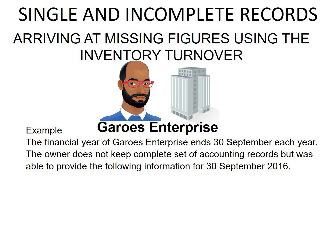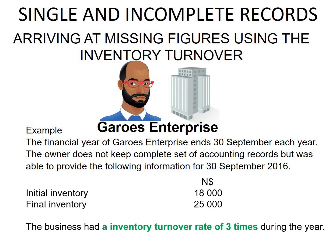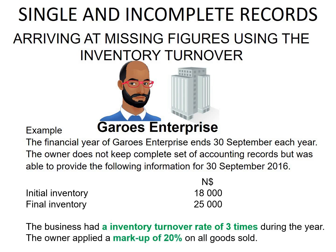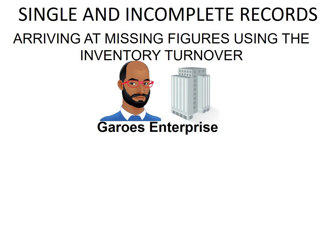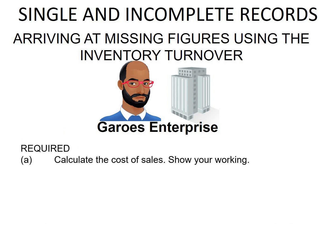In our example we have a company called Garus Enterprise. The financial year ends 30 September each year. The owner does not keep a complete set of accounting records but was able to provide the following information for 30 September 2016: initial inventory was 18,000, final inventory was 25,000, the business had an inventory turnover rate of three times during the year, and the business applied a markup of 20% on all goods sold.